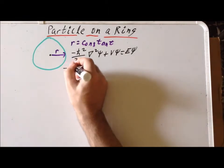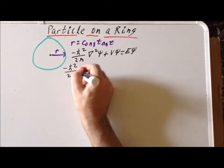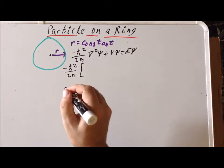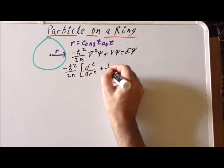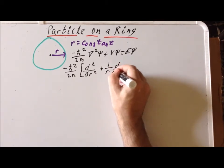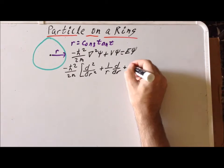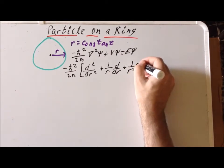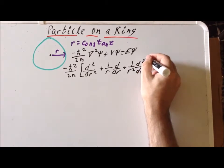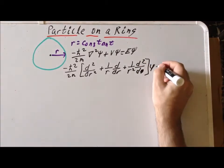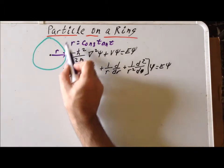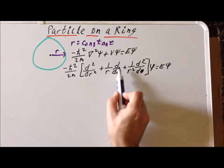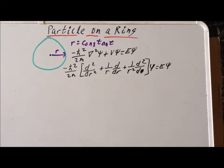To do that, we write it as minus h-bar squared over 2m, then we have the second derivative with respect to r, plus 1 over r times the first derivative with respect to r, plus 1 over r squared times the second derivative with respect to phi, all acting on psi. Now that is a complicated expression, but a couple of things will make this easier for us. Since r is a constant, both the first and second derivatives with respect to r are going to automatically equal 0.